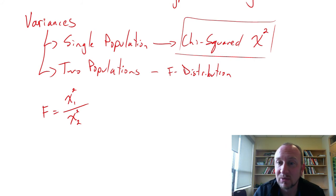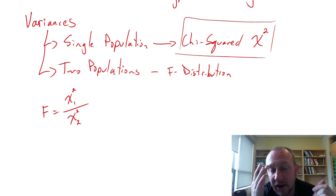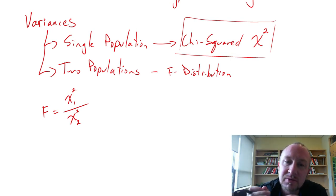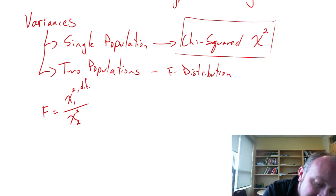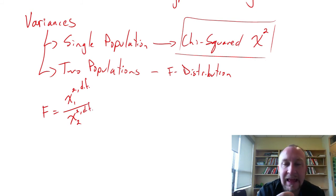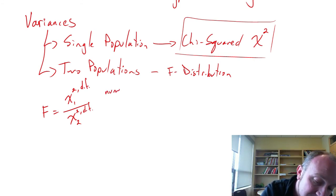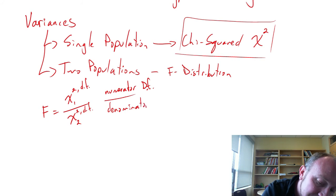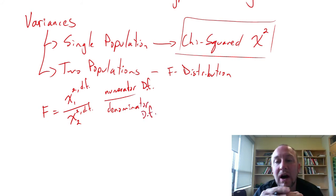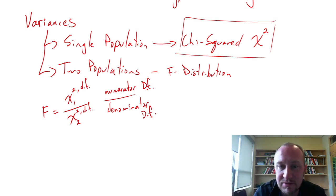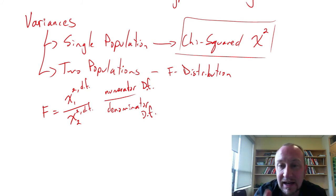The main reason F distribution tables are so tedious is that as the ratio of two chi-squared variables, each with their own degrees of freedom, we now have both numerator degrees of freedom and denominator degrees of freedom. This results in a wide variety of different variants of the F distribution. Like chi-squared, it's asymmetric and takes no negative values, since the underlying chi-squared variables are non-negative.